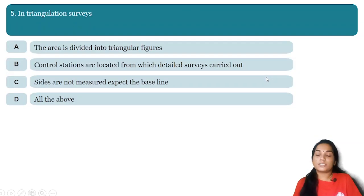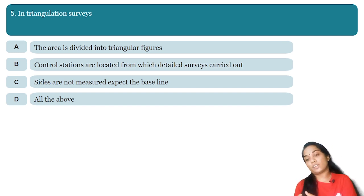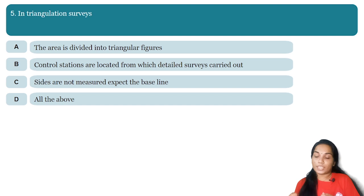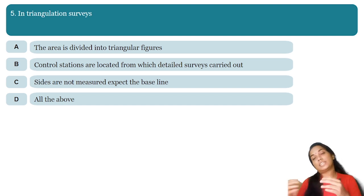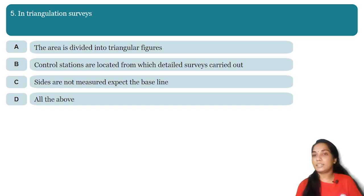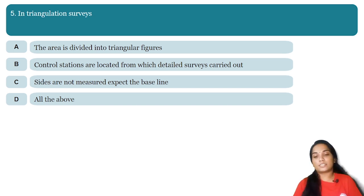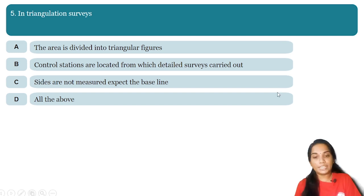In triangulation survey: Option A — the area is divided into triangular figures; Option B — control stations are located from which detail surveys are carried out; Option C — in the survey, only the baseline is measured and triangles are computed from it. These are the basic three concepts A, B, and C — so option B means all of them.